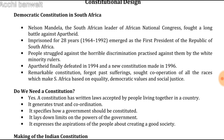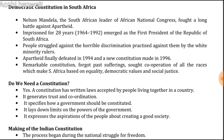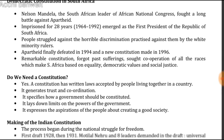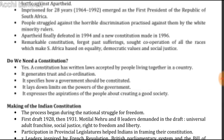Apartheid was finally defeated in 1994 and a new constitution was made in 1996. South Africa got independence and the remarkable constitution sought cooperation of all races, making South Africa based on equality, democratic values, and social justice.